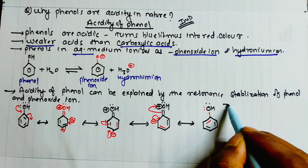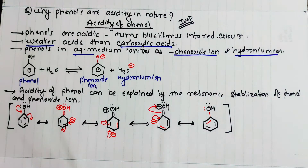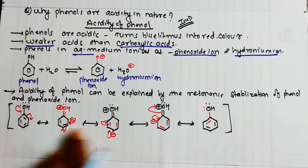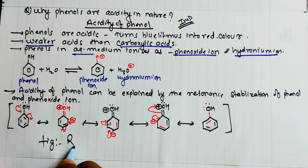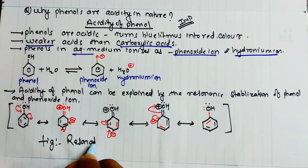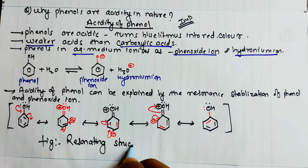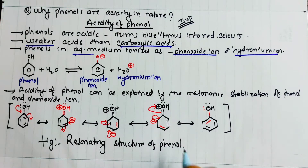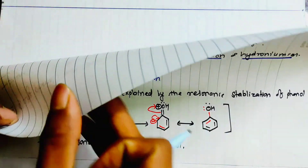This is the resonating structure of phenol. Resonating structure. Structure of phenol. Okay, let's try to explain the phenol acidity. We will check the phenol acidity and the resonance structure.